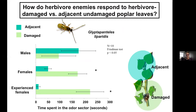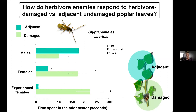Andrea investigated how this little parasitic wasp reacts to foliage damaged by the gypsy moth. In olfactometry tests, male wasps didn't seem to care what kind of foliage was present, but females did — they were significantly more attracted to gypsy moth-damaged foliage than undamaged. And after they'd had a chance to oviposit once on a gypsy moth caterpillar, experienced females chose even more strongly.